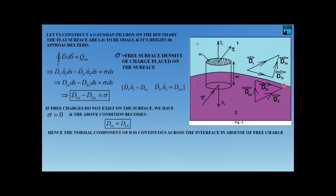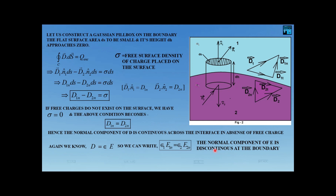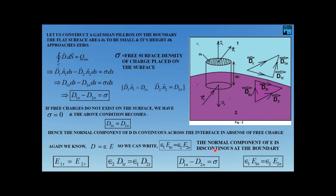Depending on the situation, we use either D1n minus D2n equals sigma (when surface charge exists) or D1n equals D2n (when sigma is zero). Since D equals epsilon times E, we can write epsilon-1 times E1n equals epsilon-2 times E2n. This means E1n does not equal E2n — the normal component of the field vector E is not continuous across the boundary.